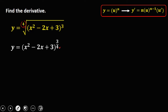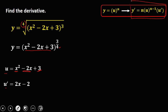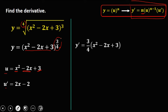Using the General Power Rule, u is x squared minus 2x plus 3. To get u prime: the derivative of x squared is 2x, the derivative of negative 2x is negative 2, and the derivative of 3 is 0. So u prime equals 2x minus 2. Now to find y prime: n is the exponent 3/4, times u which is (x squared minus 2x plus 3), to the power n minus 1, which is 3/4 minus 1.